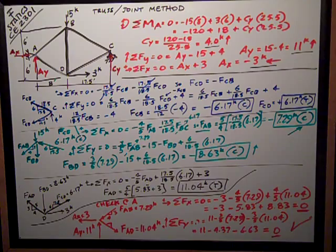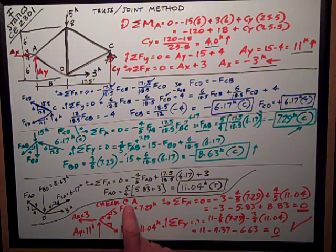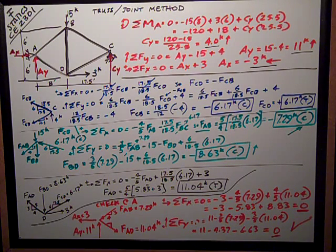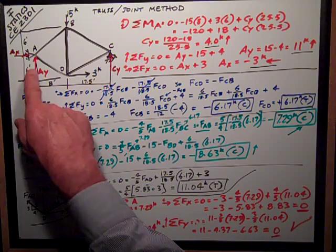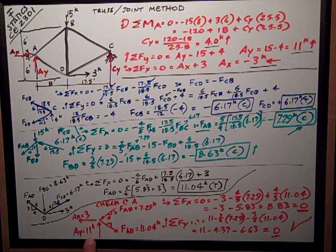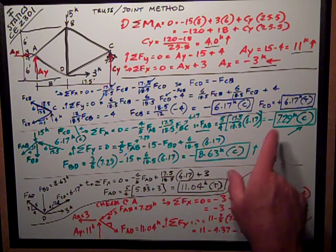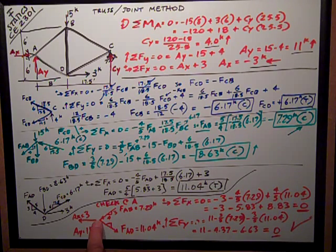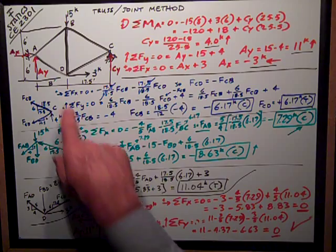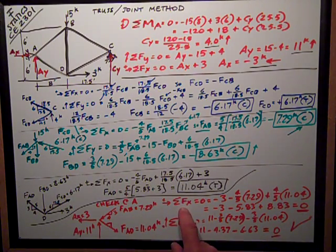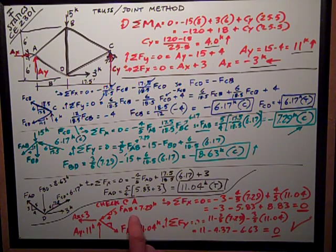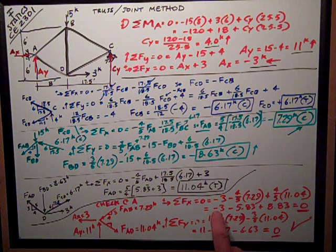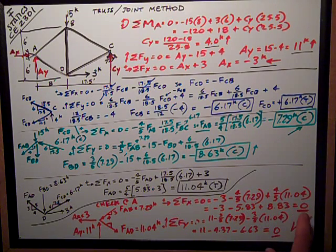Now, whenever I can, I can check my results by looking at joint A. This is optional. If I have time on a test, I'd want to do this and make sure that I've got the correct answer. So I do a free body at joint A, and I have the reaction forces of 3 horizontal and 11 vertical. I have the force in AB that I've solved for, 7.29 compression, so it's pushing on the joint. I have the force in AD, which is 11.04, which is tension pulling away from the joint. Sum of forces in the X direction, positive is to the right, is equal to negative 3 minus 4 fifths of 7.29, this component, plus 4 fifths of 11.04, the component coming from AD. That's negative 3 minus 5.83 plus 8.83 is equal to zero, so that checks out.